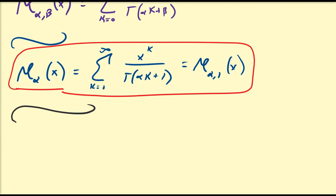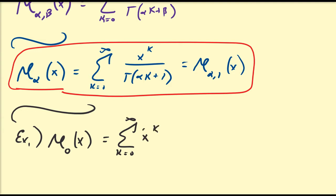Let's start with some basic properties. Example one: find a nice representation for E_0(x). If we let alpha equal zero, we have 0 times k equals zero, plus one is one, and gamma(1) equals 0! equals 1. So this is precisely equal to the sum from k equals zero to infinity of x^k, which converges to 1/(1-x), provided that the absolute value of x lies between zero and one.